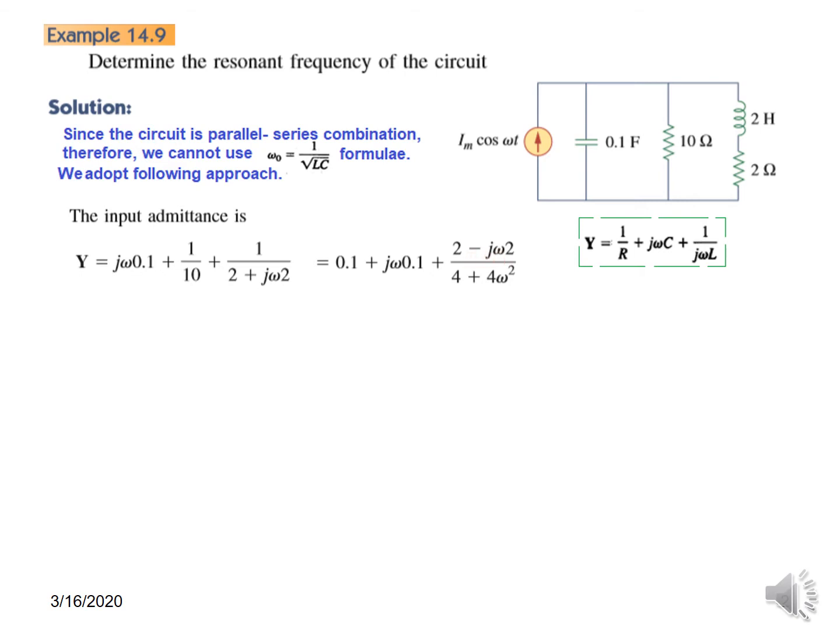So now j is gone from the denominator, and we separately write these two terms. We take the j terms together—this and this together.